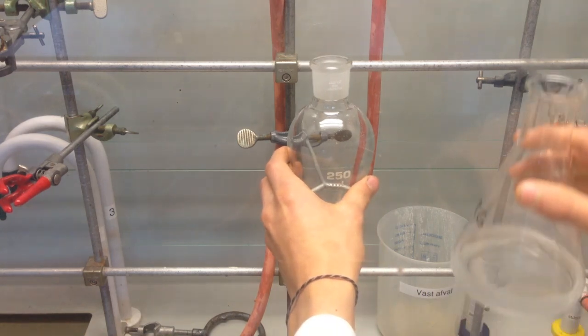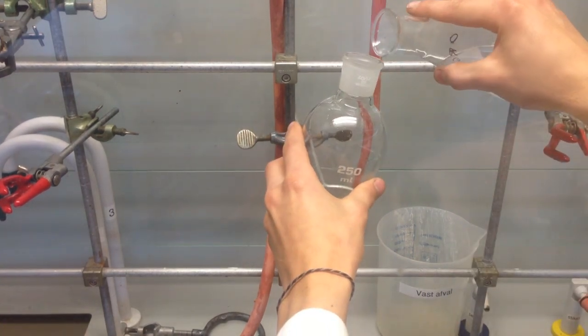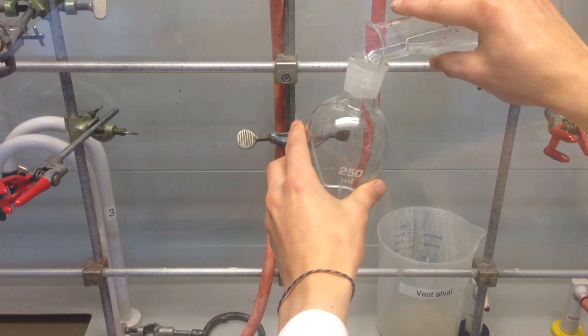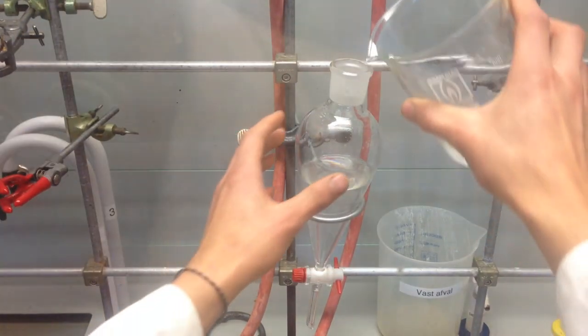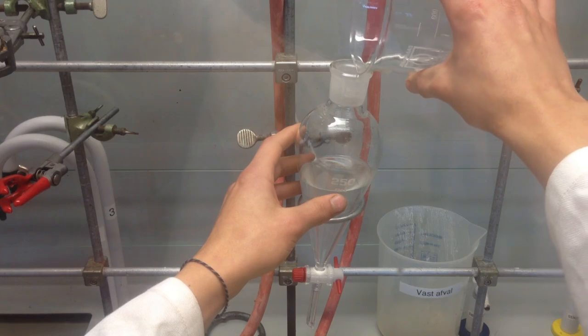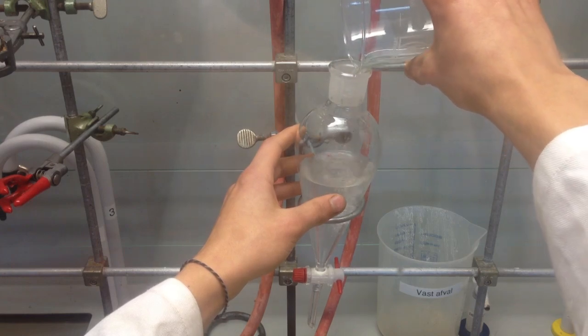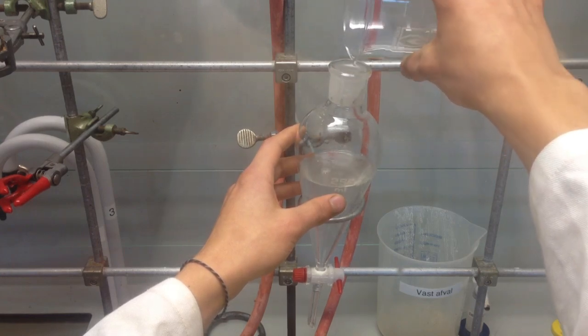After the separating funnel is empty, pour back in the hydrosol and let it sit for a few minutes. I repeated this process many times in order to gain as much oil as possible.